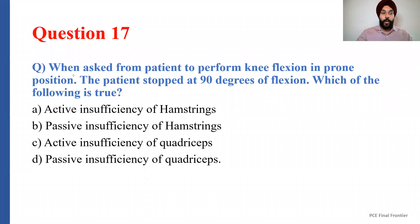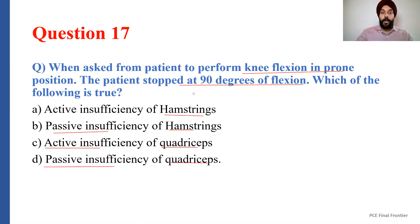Let's read the question together. When asked from a patient to perform knee flexion in prone position, the patient stopped at 90 degrees of flexion. Which of the following is true? Option A: active insufficiency of the hamstrings. Option B: passive insufficiency of the hamstrings. Option C: active insufficiency of the quadriceps. Option D: passive insufficiency of the quadriceps. If you remember the rule that active and passive insufficiency is only applicable to the two-joint muscle — all options here have two-joint muscles.